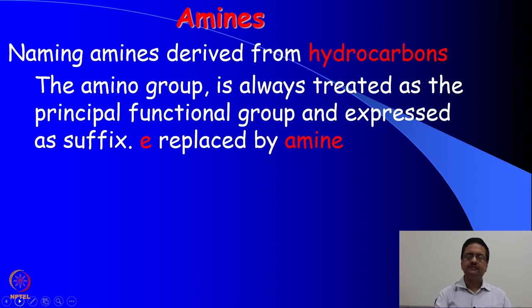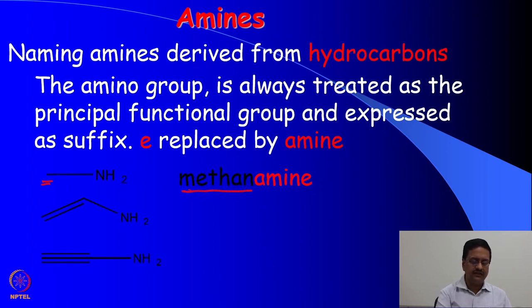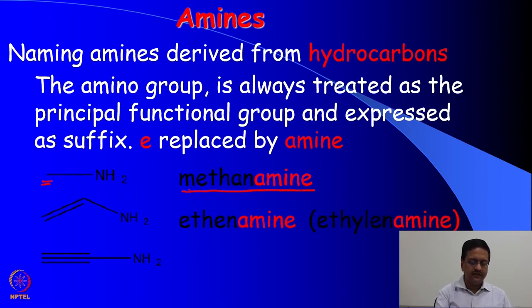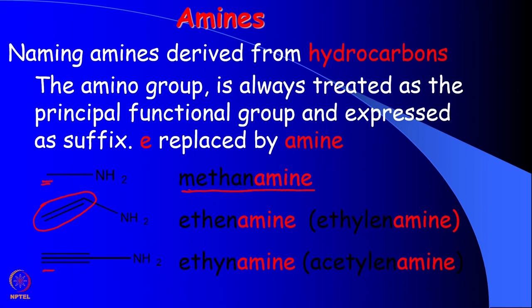The terminal 'e' is replaced by 'amine.' For example, the first compound comes from the single-carbon compound methane — instead of writing 'methane-e-amine,' we drop that 'e' and write methanamine. The next one is etheneamine or ethenylamine because that group contains a double bond, giving etheneamine. The third one has a C≡C triple bond, so it originates from ethyne. Dropping the last 'e' and adding 'amine,' it is called ethynamine.